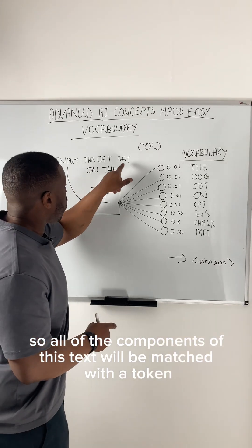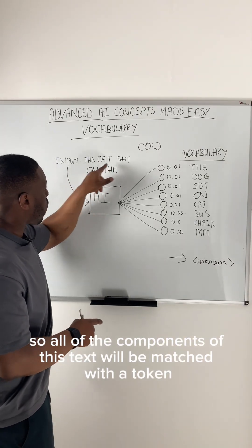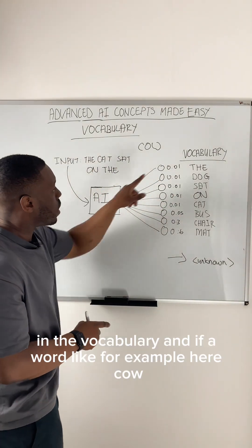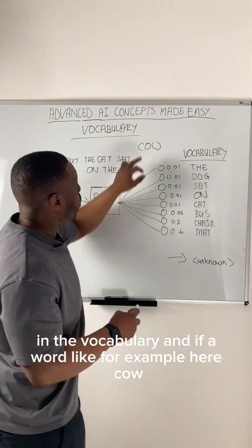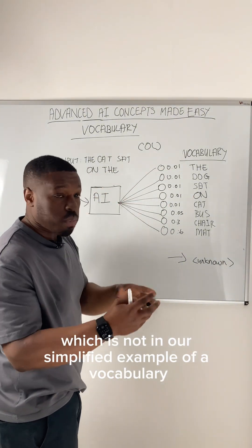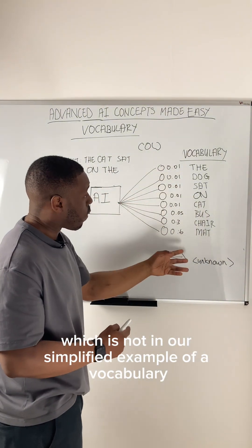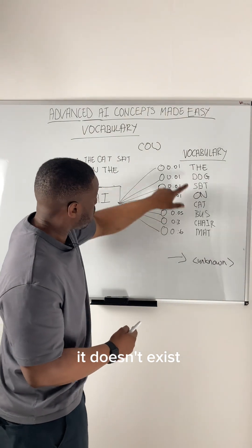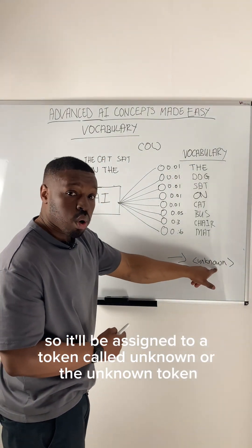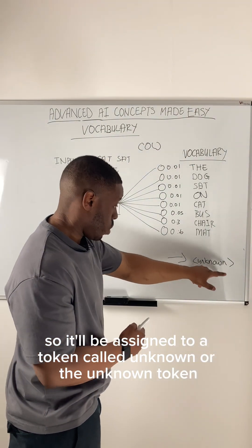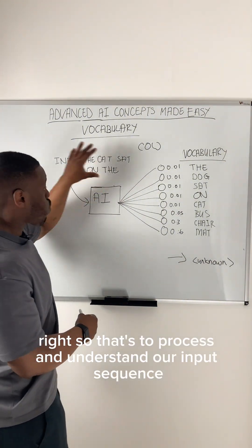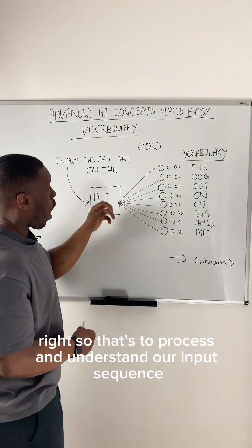All of the components of this text will be matched with a token in the vocabulary. If a word — for example, 'cow' — is not in our simplified example of a vocabulary, it doesn't exist, so it'll be assigned to a token called the unknown token.